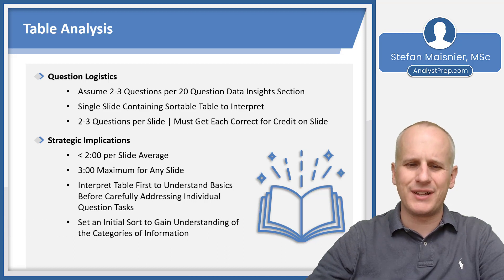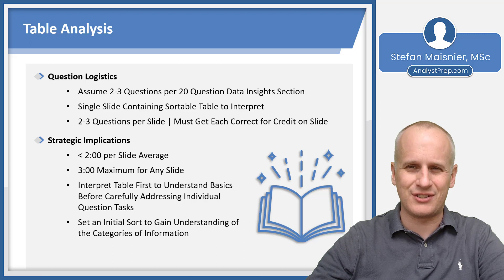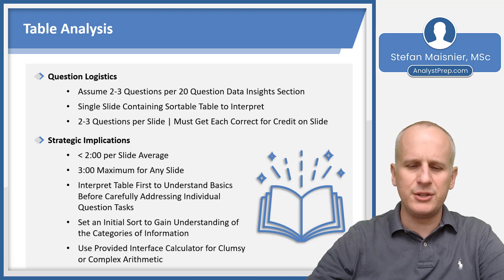You'll also really want to consider an initial sort that is useful to gain an understanding of the categories of information in the table. Very often, the initial sort is just alphabetical and that doesn't really help. So you'll want to find a more intuitively useful sort. And once again, use that interface calculator for clumsy or complex arithmetic.